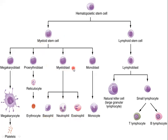Basophils, neutrophils, and eosinophils all come from a rapidly dividing cell called the myeloblast, and this myeloblast comes from the myeloid stem cell. Monocytes come from the monoblast, and the monoblast also comes from the myeloid stem cell.